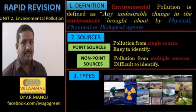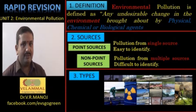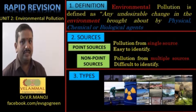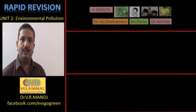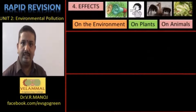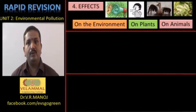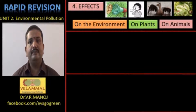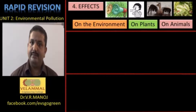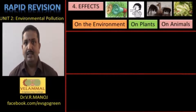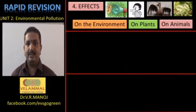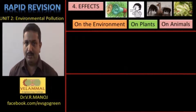Following the definition of environmental pollution, the sources and the types, you then have to tell about the effects of the environmental pollution: what are the health effects, what are the effects on the environment, on the plants, on the animals, etc.